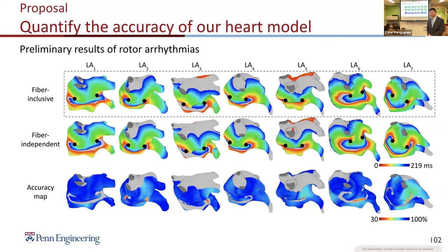Discussion: For rotor arrhythmia, the clinically most important metric is the accuracy around the rotation centroid (black dots), not the transition regions. It is important to highlight accuracy specifically around clinically relevant locations on the map. Another concern raised is that the ground truth is itself a simulation, so the comparison measures the difference between two simulation models rather than between a simulation and actual clinical data — the fiber-inclusive model uses DTMRI-derived fiber data and the same differential equation framework.